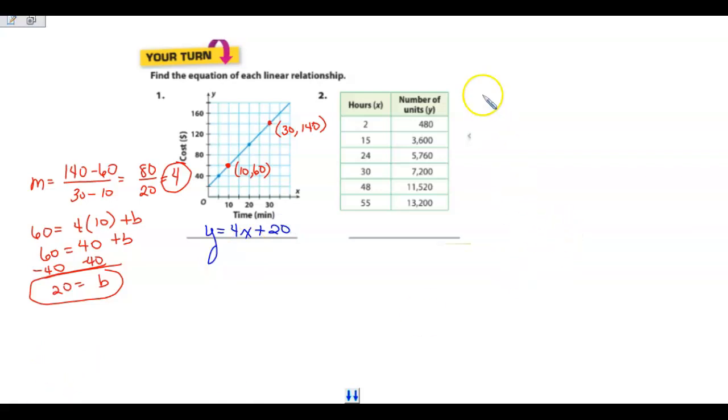Now let's take a look at the next one, number two. This one is from a table, and they are giving us quite a bit of information here. And we need to determine what the slope is and what the y-intercept is. So the slope and then the y-intercept. So let's start with the slope.